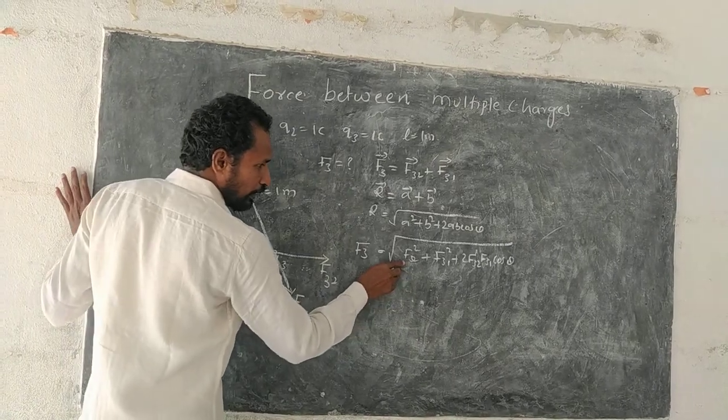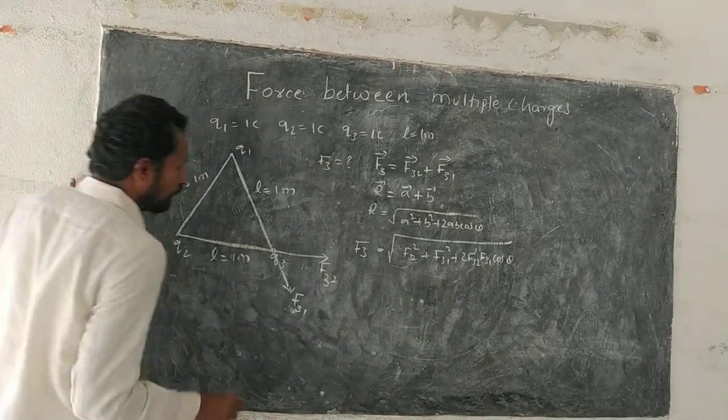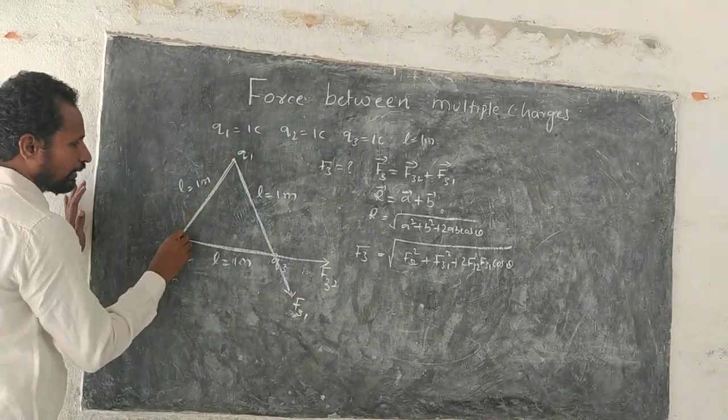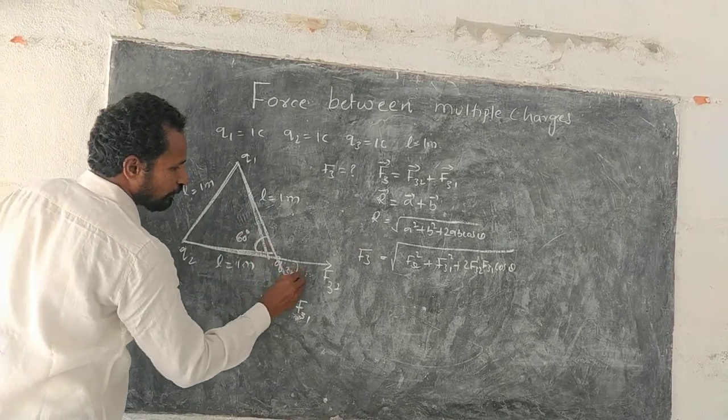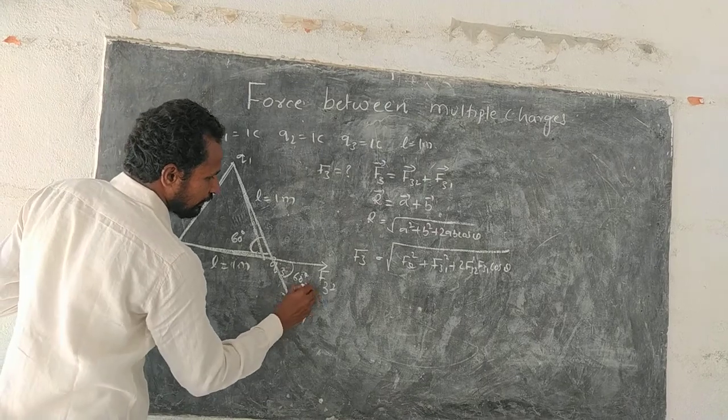Now, to find this, we need to know magnitude F32, F31 and cos theta. This is equilateral triangle, the angle is 60 degrees, this will be also 60, this is theta.